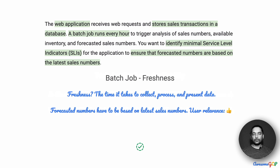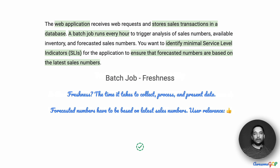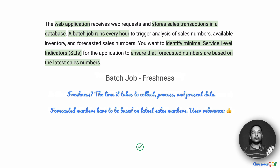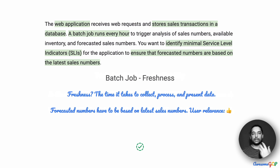How about batch job freshness? Freshness is typically the time it takes to collect data, process it, and present it back to whoever wants it. In this case, a key requirement is that we have to ensure that forecasted numbers are based on the latest sales numbers. If we got data right now but processed it much later, the correctness of the system would be wrong. Therefore, it is very important for the user in this requirement that we have data that is fresh — we have to be able to collect, process, and present it quickly so that consumers of the report have the latest numbers.